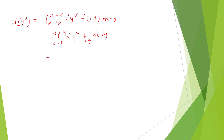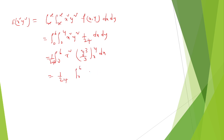Again, we integrate with respect to y first, taking 1/24 outside. Since x² is constant with respect to y, the y² integration gives y³/3, evaluated from 0 to 4. So we get (1/24) times the integral from 0 to 6 of x² times 64/3, then dx.